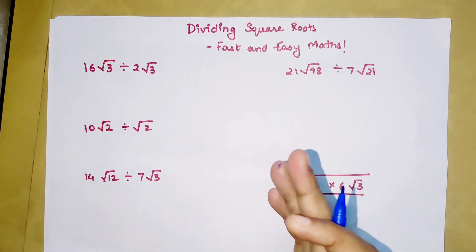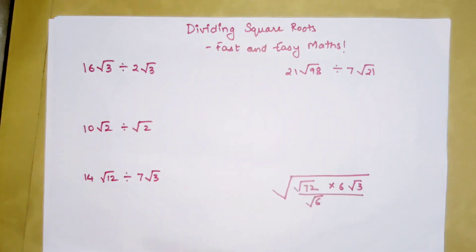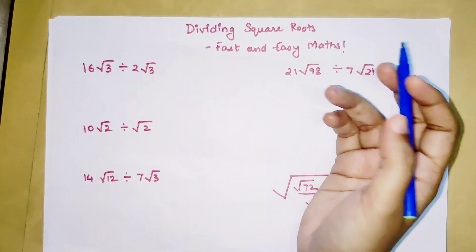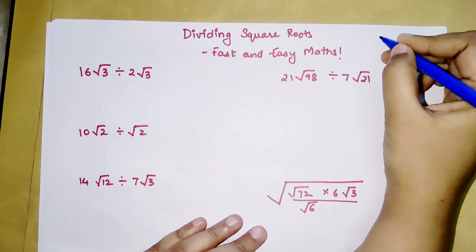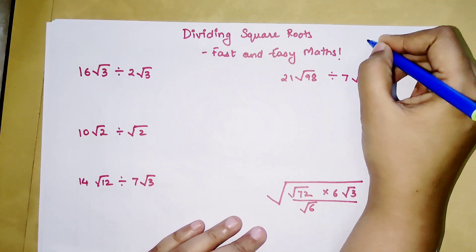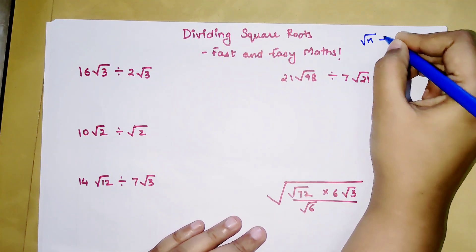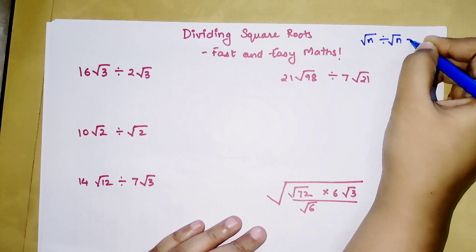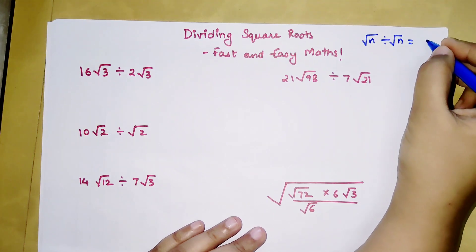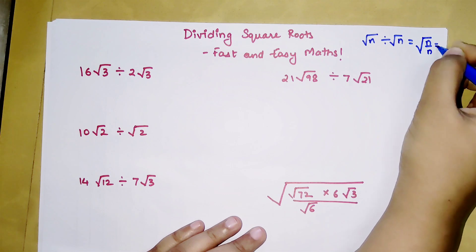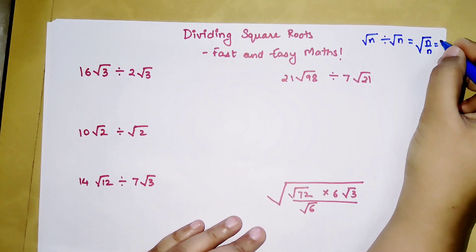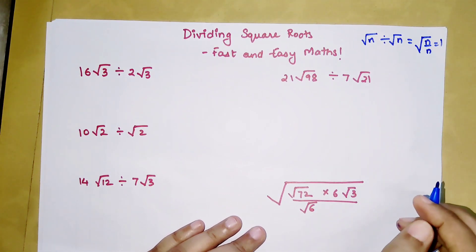Today we are going to understand how to divide square roots, or how to divide numbers which have square roots. One very basic rule you need to know is that whenever you have root of n divided by root of n, they cancel out — it becomes n upon n, so you get the square root of 1, which is just 1.